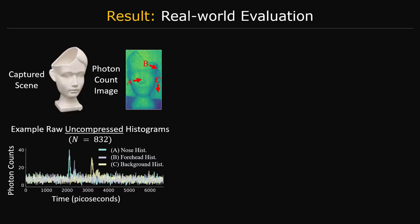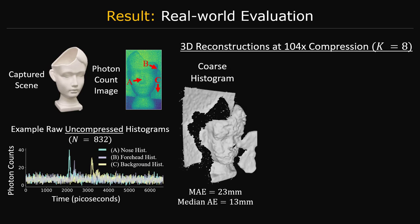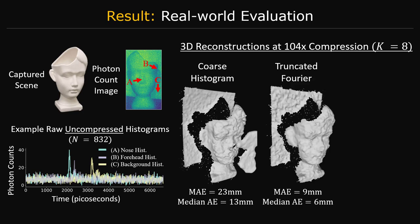We evaluated different coding matrices on real-world experimental data. Using a coarse histogramming approach with eight time bins and a sub-bin depth estimation algorithm, we get the following depth image. If we use a truncated Fourier matrix instead, we can greatly improve the results over a coarse histogram.